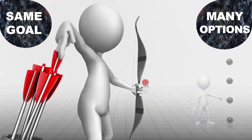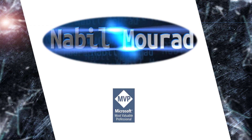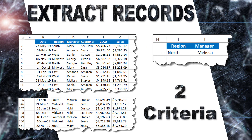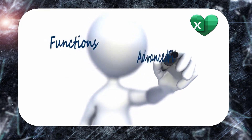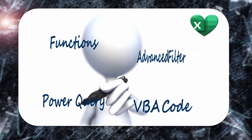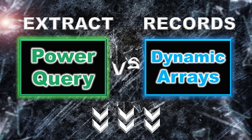Excel gives us different options to perform the same task and achieve the same goal. I am Nabil Murad. In this tutorial I show you how to extract records from a list with two conditions. I could do it with different methods using nested functions, advanced filter, a VBA code, or Power Query and dynamic arrays. However, in this tutorial I'll be using Power Query and dynamic arrays. You can watch my tutorials where I use the other methods by clicking on the link in the description below the video. Now let's see how we do that in Excel.